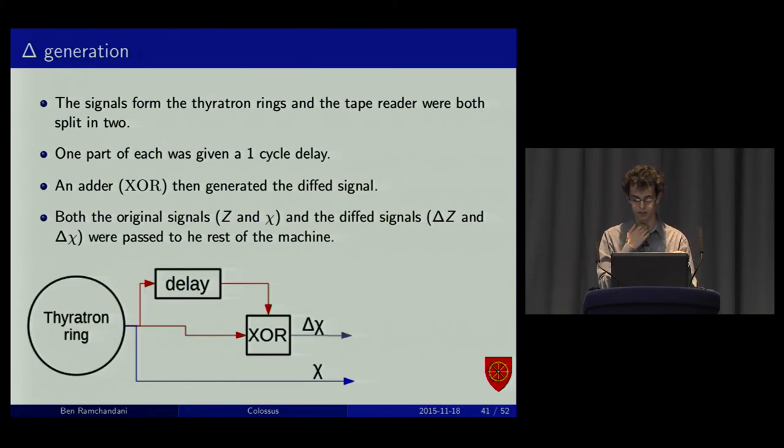This was how the diffing worked. You'd do a delay, you'd get to do the XOR and that gave you the diff value. Again, the logic units could choose between using one or the other, the diff or plain values.